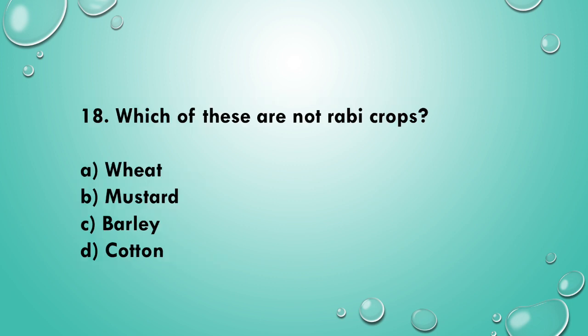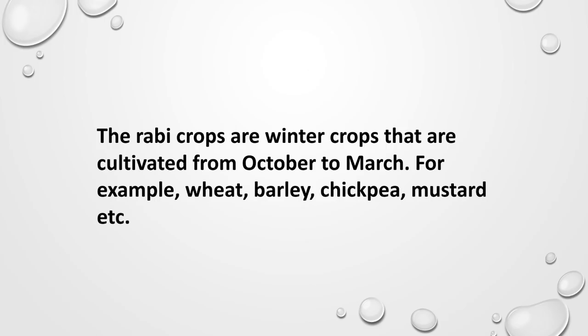Question 18: Which of these are not rabi crops? Look at the options carefully and select your answer. The answer is option D, Cotton. The other three are rabi crops. Rabi crops are winter crops cultivated from October to March — for example, wheat, barley, chickpea, mustard, etc.